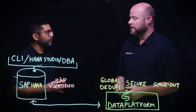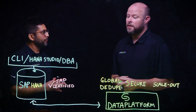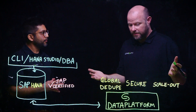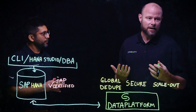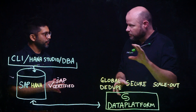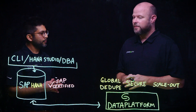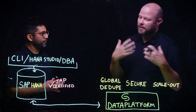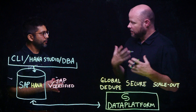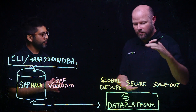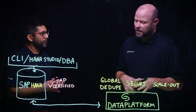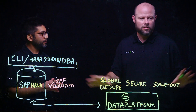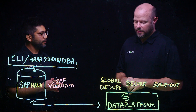Some of the additions that Cohesity offers are global deduplication across multiple silos, multiple workflows, or multiple use cases. We can enhance security consistently across multiple use cases or silos. With scale-out, we can actually add compute, storage, capacity, and network from a hyper-converged storage perspective with our file and object services — providing global deduplication and global functionality across multiple use cases.